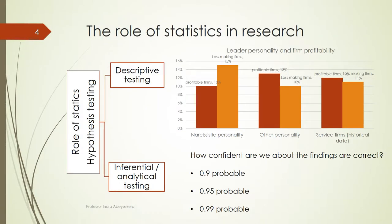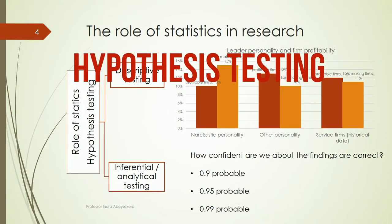When we test, what we do is hypothesis testing. So the second key role of statistics in research is that we use statistics to test hypotheses. We use numbers and we test hypotheses using statistics.